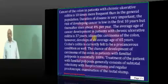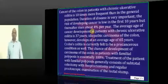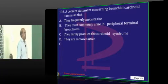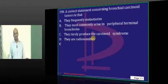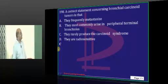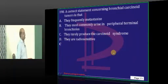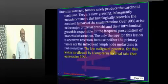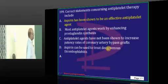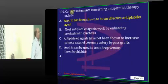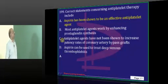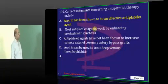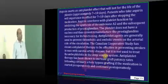Fibroadenoma has no malignant potential. Bronchial carcinoid only rarely produces carcinoid syndrome and does not frequently metastasize. Aspirin is a very effective anti-platelet agent.